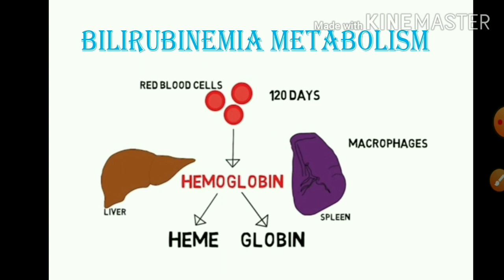Bilirubin comes from red blood cells. Red blood cells have a 120-day lifetime, after which they are broken down by the liver and spleen organs.